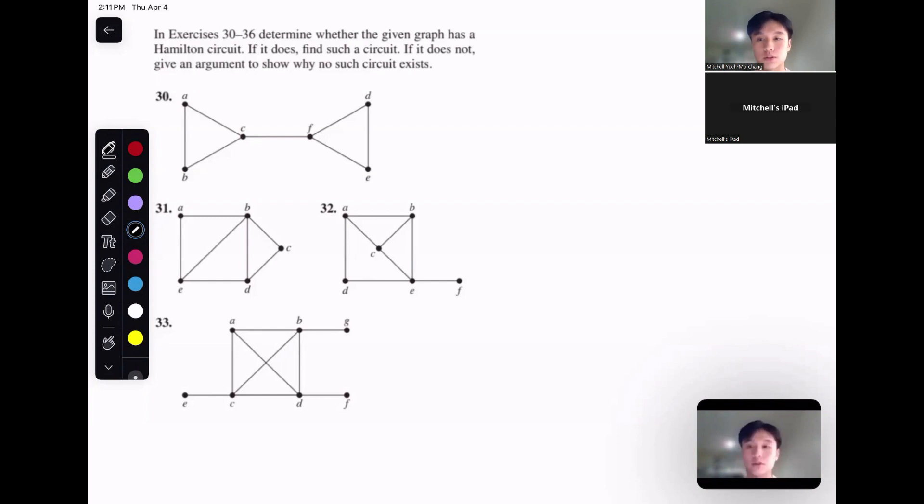We have another video talking about Eulerian circuits, which is when you visit every single edge within a given graph and return to the same node that you began with. Hamiltonian circuits are similar, where you try to visit every single vertex instead. You're going to want to try to visit every vertex and then get back to where you started originally.